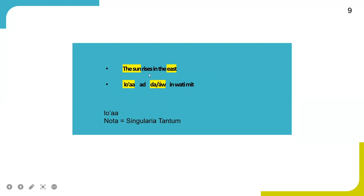Another example is 'the sun rises in the east.' In Gorwa, it is 'Lua at Davo in Watimik.' The location noun here is 'east.' In Gorwa, Davo means 'east,' and it indicates the location of where the sun rises.